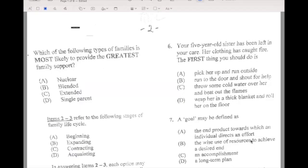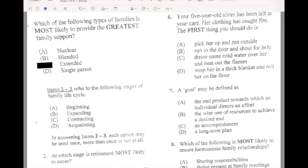Question number one, which of the following types of families is most likely to provide the greatest family support? If your answer is extended, then you are correct. Item two to three refers to the stages of the family cycle: beginning, expanding, contracting.